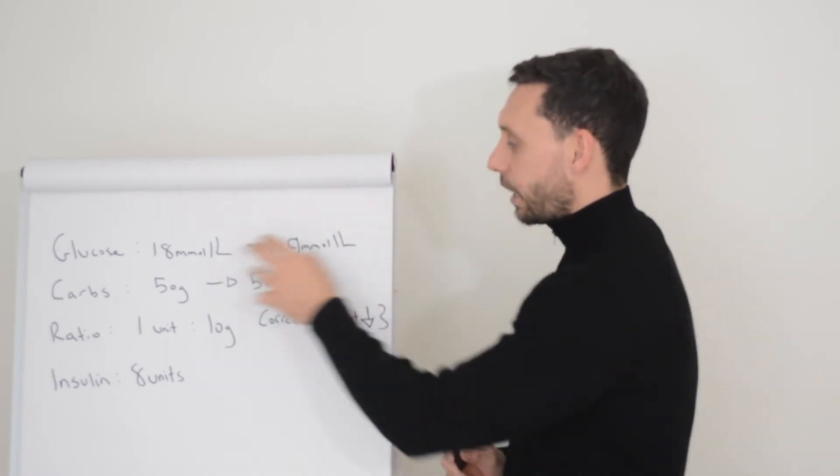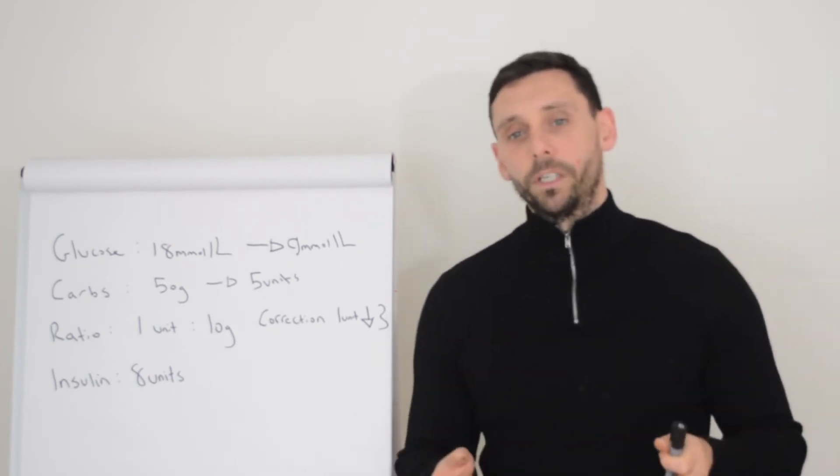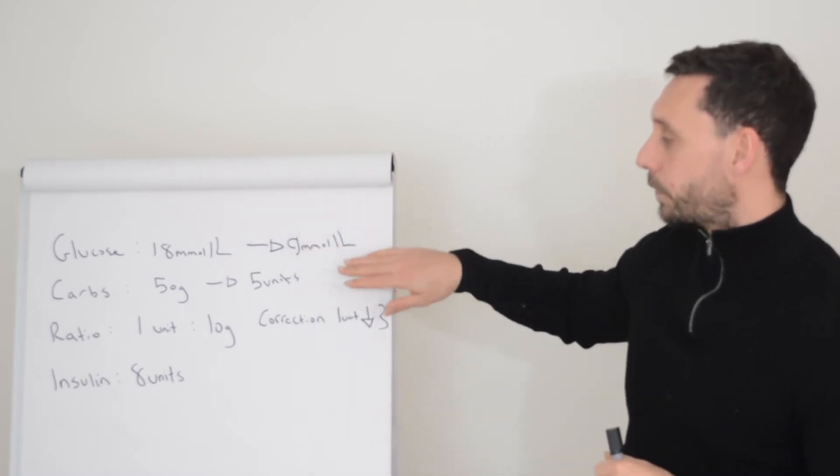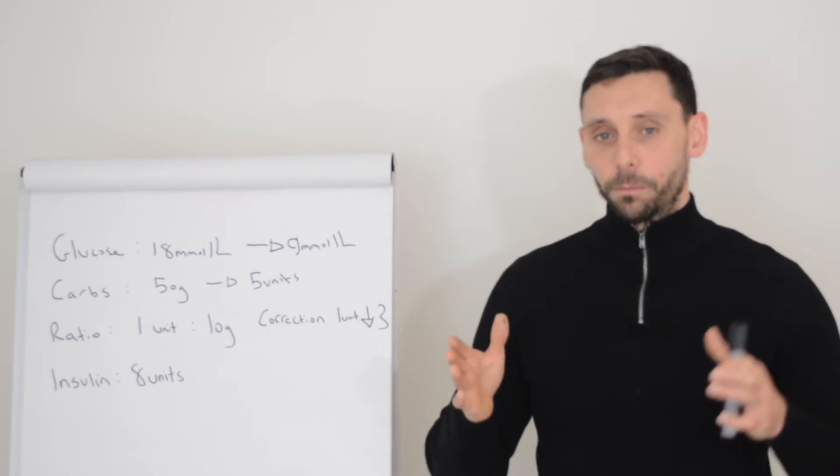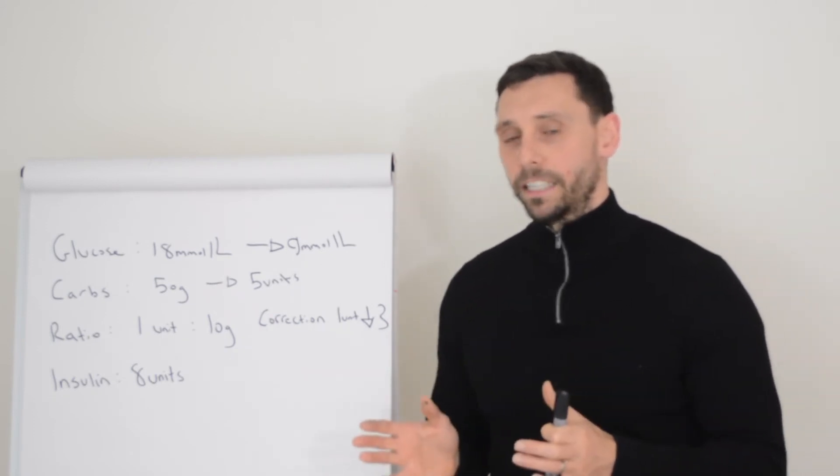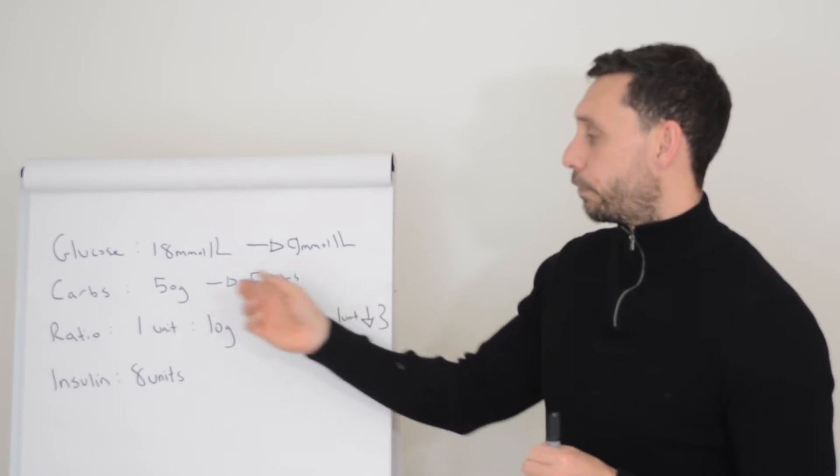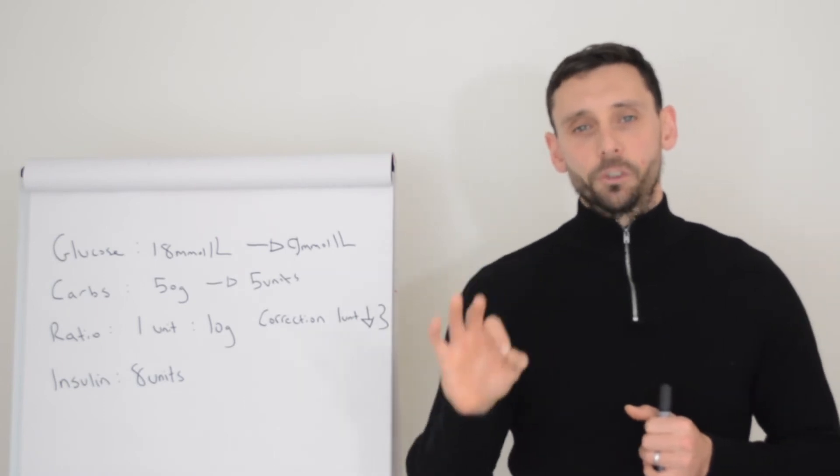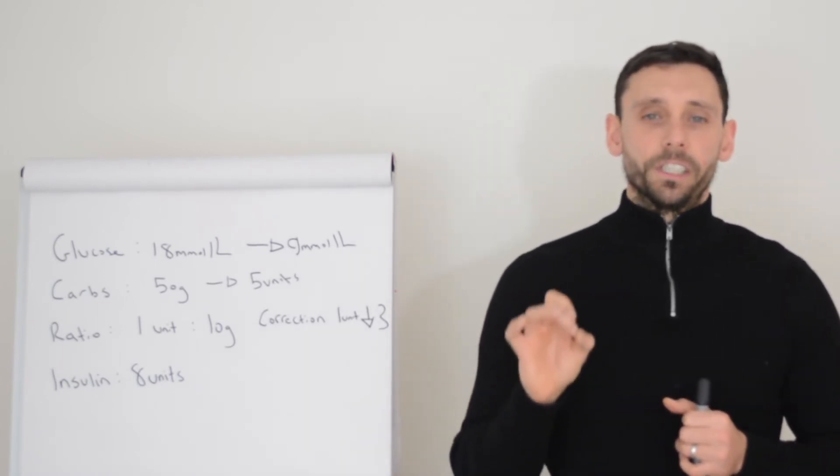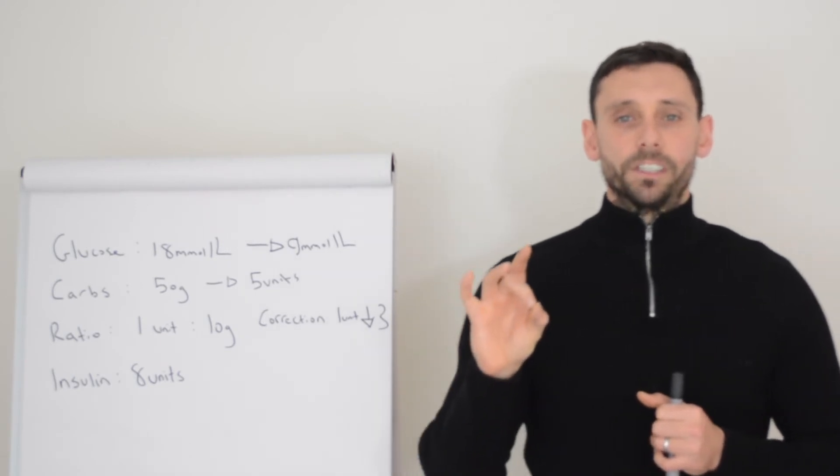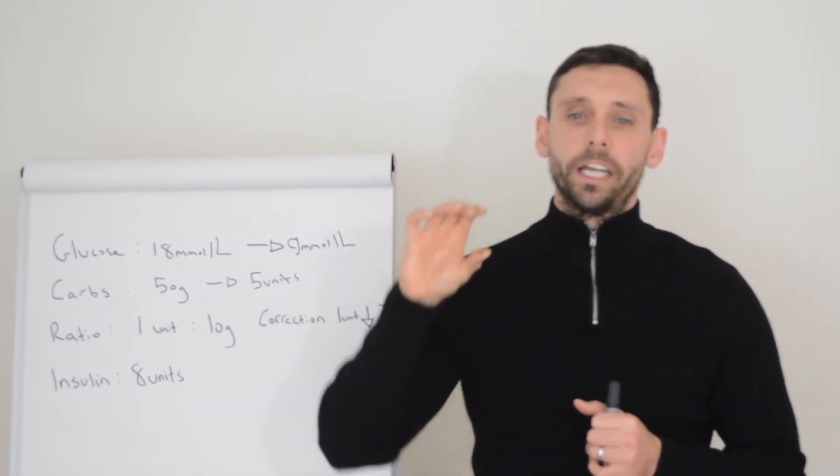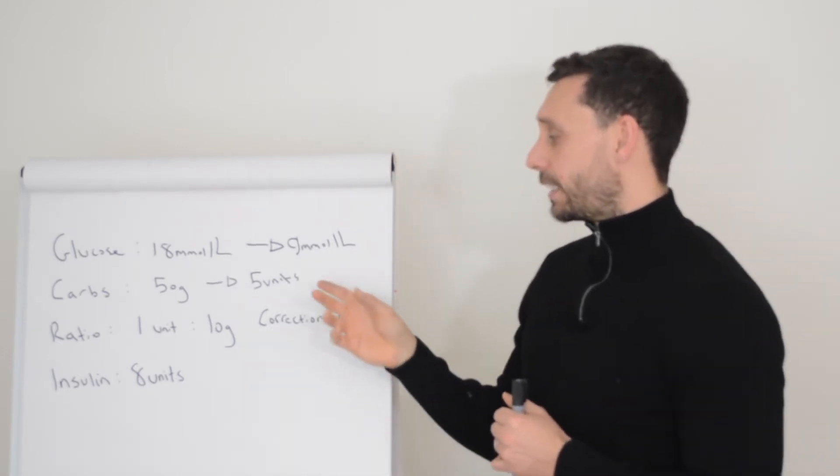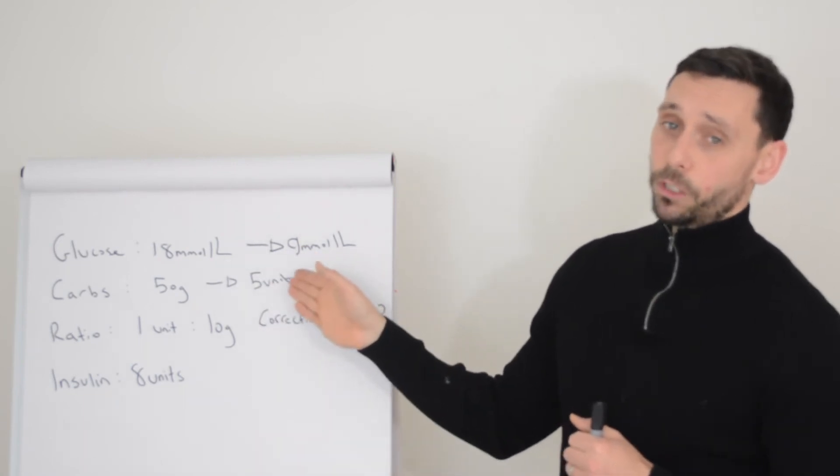So the first thing we need to do to test the carbohydrate ratio is try and find a time point when you're going to have a meal when you don't need a correction. Because if you can do that, let's say you're between five and 10 and you've got a meal planned, then the only thing you need to give insulin for is your carbohydrates, and therefore we get a clean look at how well that ratio is working. Obviously, and I keep stressing this, you need to make sure that you've calculated the carbohydrates correctly. Because if you haven't, then we can never truly test this. So be quite meticulous with this at the beginning and make sure those carbs are correct.